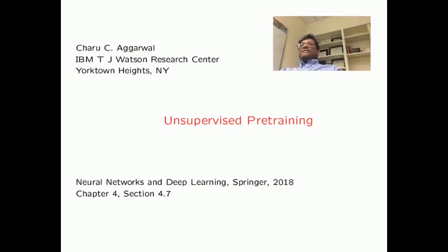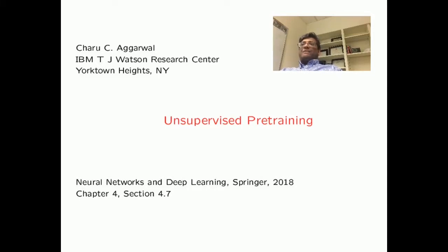In some of the earlier lectures, we discussed the problems associated with convergence in neural networks and the importance of initialization in ensuring good convergence behavior. One of the methods recently proposed for good convergence behavior is unsupervised pre-training. However, the utility of unsupervised pre-training goes beyond ensuring good convergence behavior — it also acts as a regularizer. In this video, we will discuss the details of unsupervised pre-training and its usefulness as a regularization method.